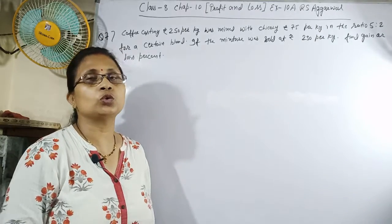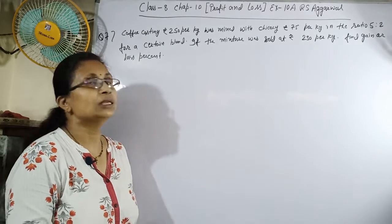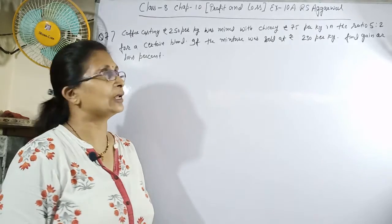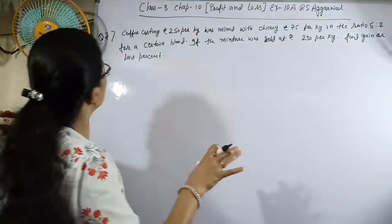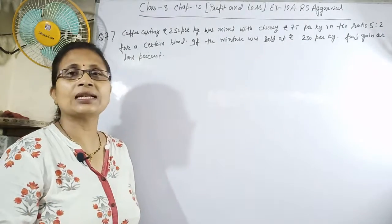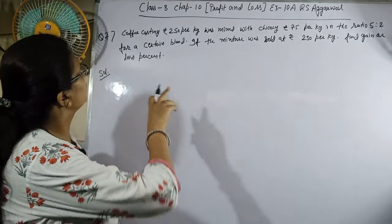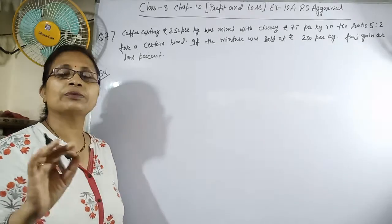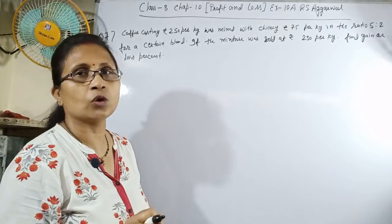find the gain or loss. First of all, let's take 5 kg of coffee mixed with 2 kg of chicory.